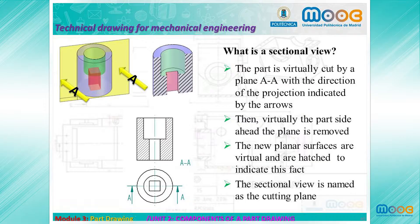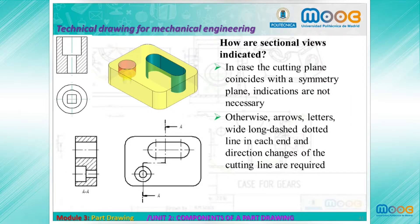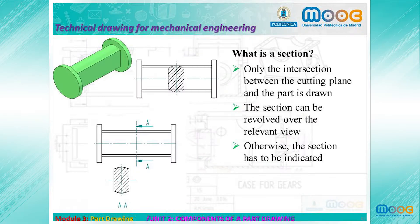What is a sectional view? We virtually cut the part by a plane AA, with the direction of projection indicated by arrows, orthogonal to the plane. The part on the near side of the plane is removed, and we obtain a cut part. In this new virtual part, new virtual surfaces are created that do not really exist, and these are hatched to indicate this effect. The sectional view is named after the cutting plane.